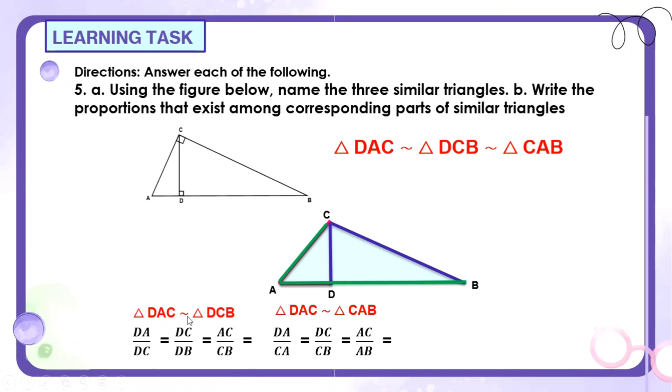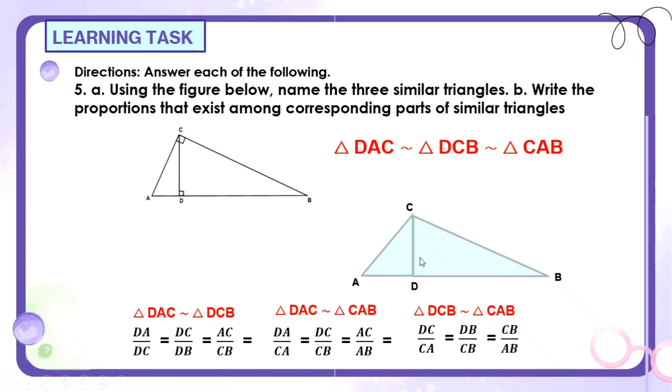And, meron pa. Kasi dito, ang pinompare natin is DAC and CAB. Pero, paano naman itong dalawa? Yung triangle DCB and triangle CAB. I-compare din natin sila. Triangle DCB. Ito, DCB. Itong triangle na ito. And, yung CAB. C-A-B. Yung isang buo na triangle. Yan naman ang tignan natin or compare natin. Segment DC over CA. Ayan sya. Yung isa pa is equal to segment DB over CB. At, yung isa pa is yung segment CB over AB. Itong AB kabuuan niya. So, all in all, meron tayong nabuong 9 na proportions na nage-exist dito sa ating triangles. Sa tatlong triangles na meron dito sa ating given.